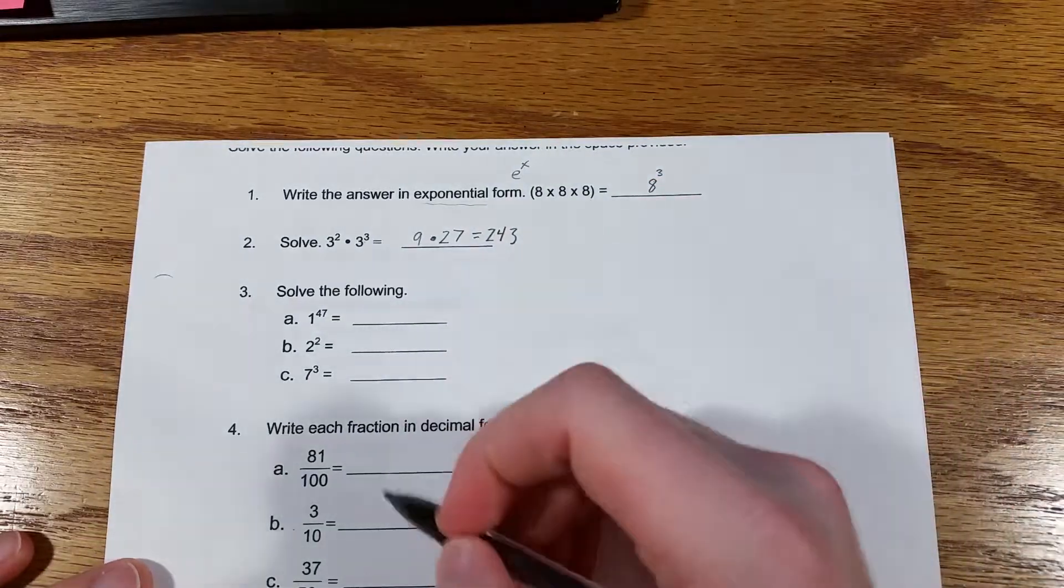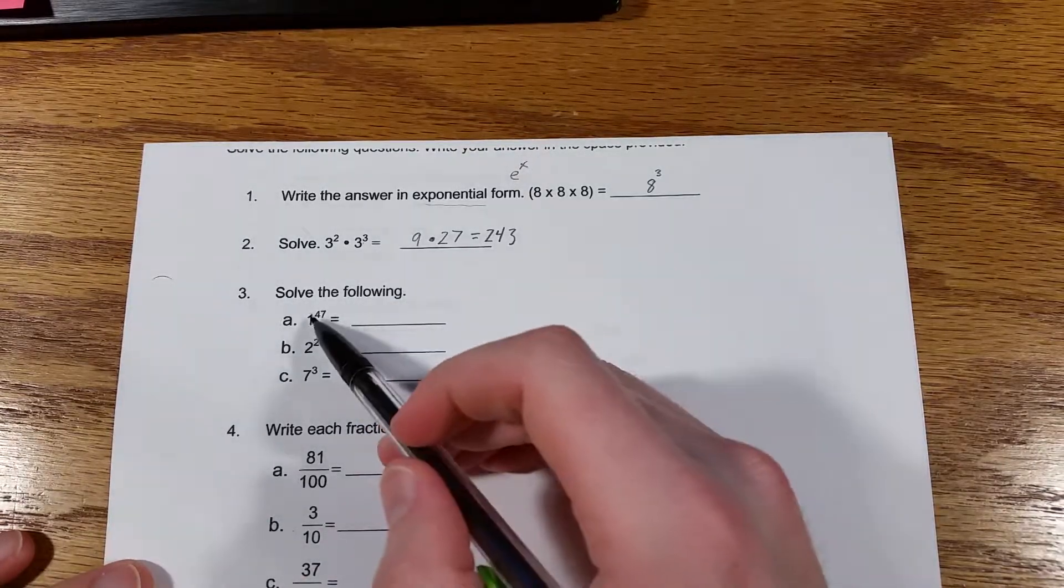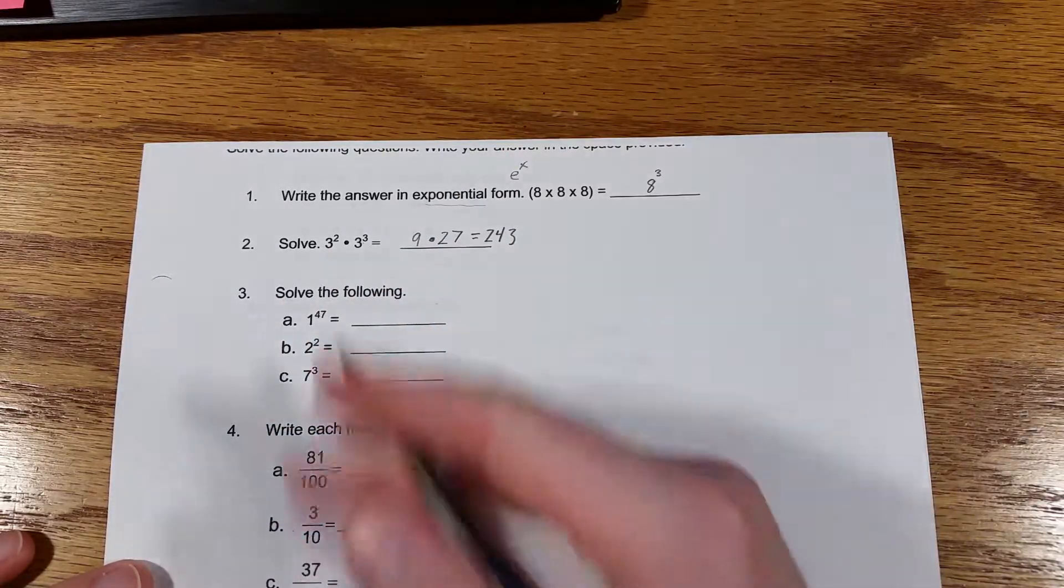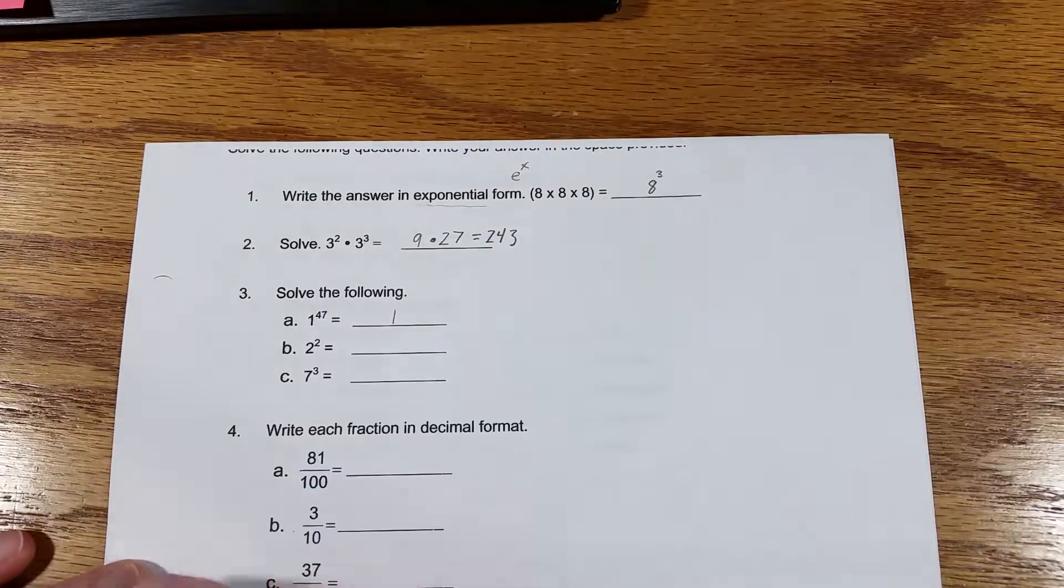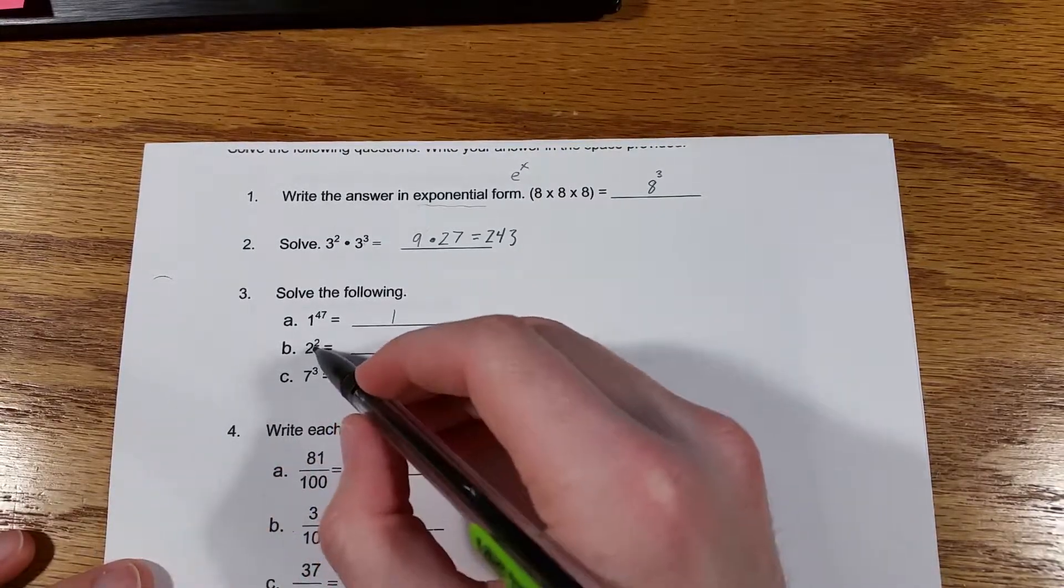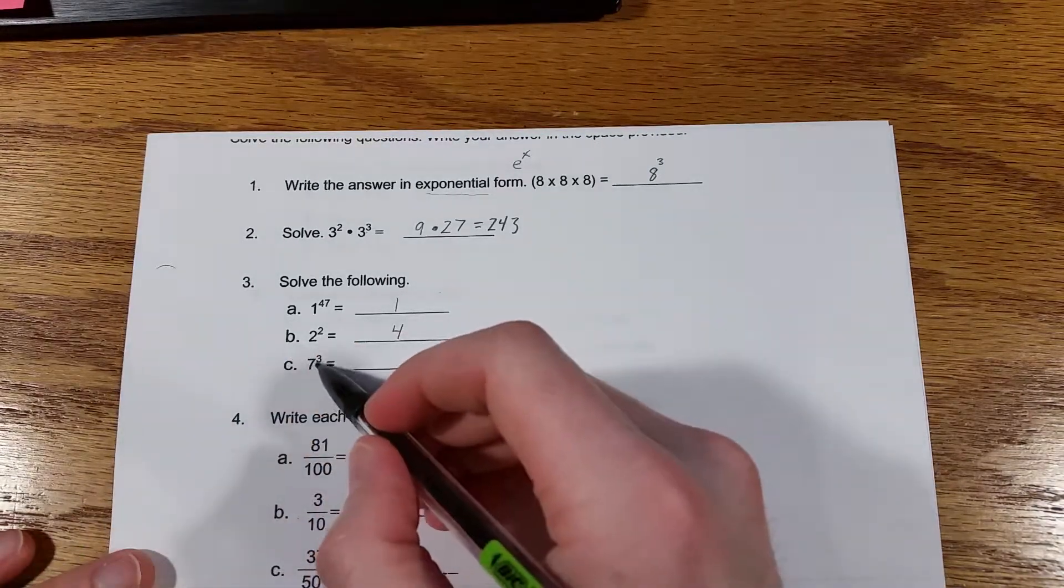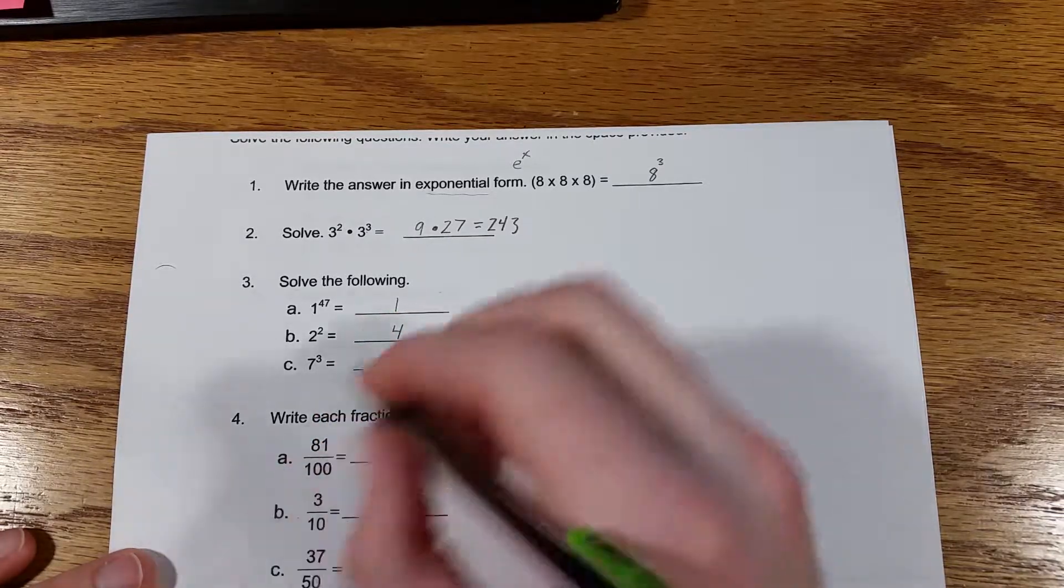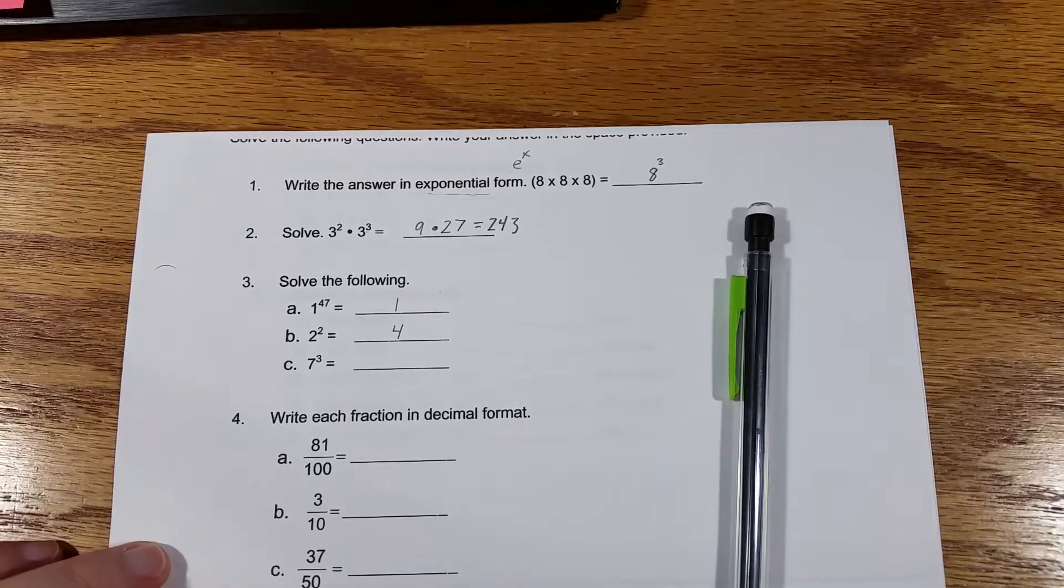Number three, solve the following. 1 to the power of 47. So 1 times itself 47 times, 1 times 1 is 1, times 1 is 1, so 1 to whatever power is still equal to 1. 2 to the power of 2, 2 times 2 is 4. 7 to the power of 3, 7 times 7 is 49 times 7, and I have to use a calculator for that one also.